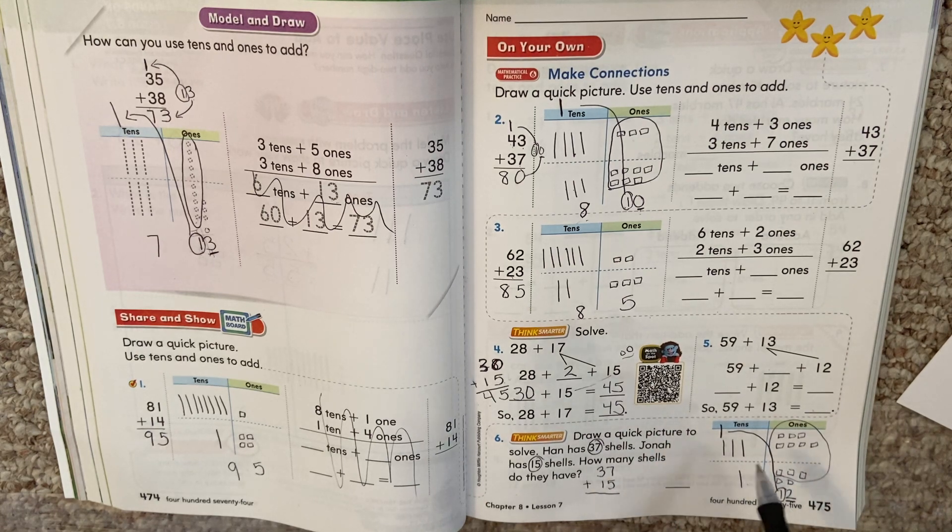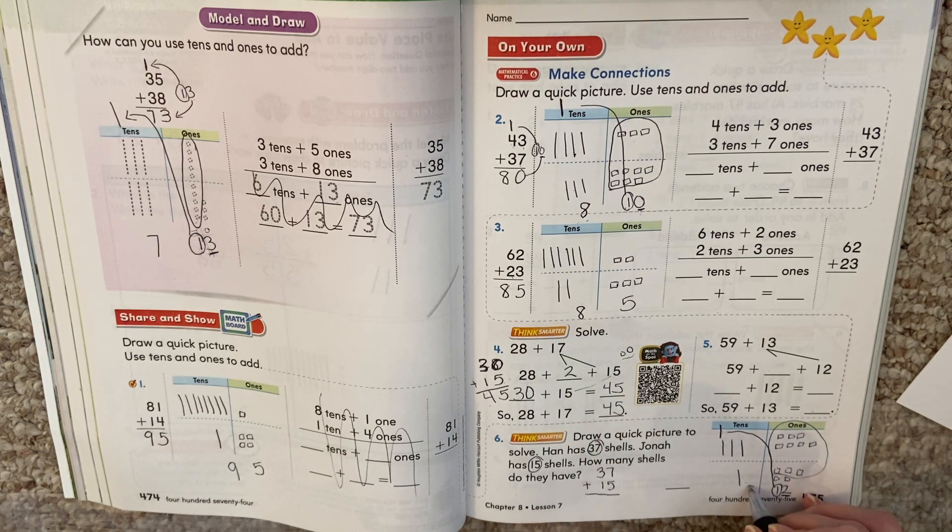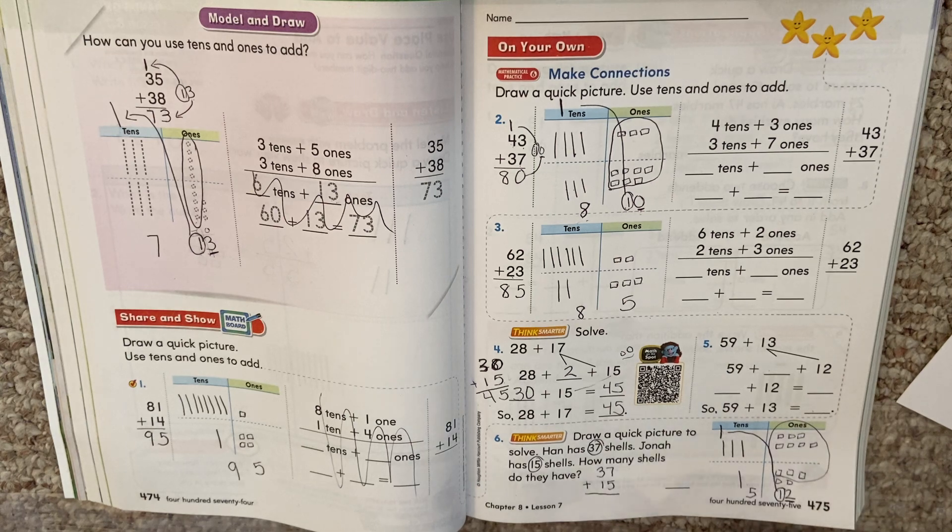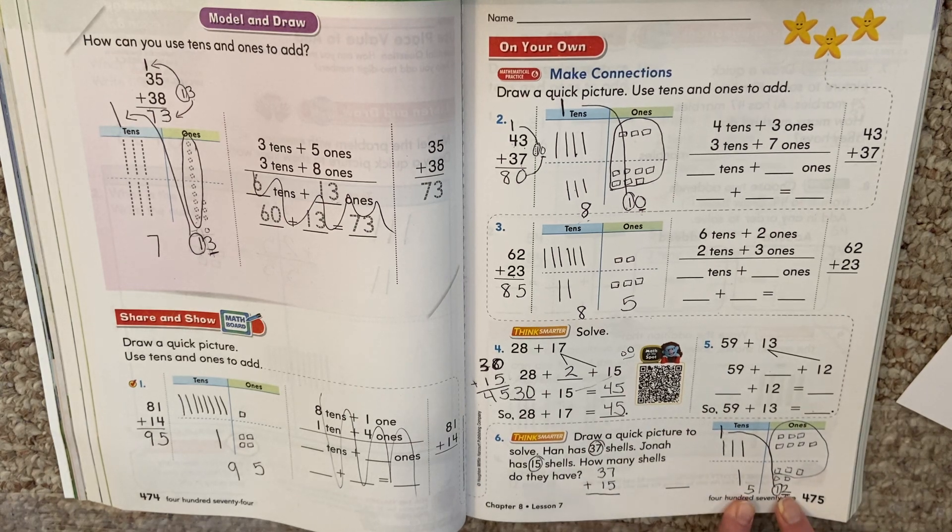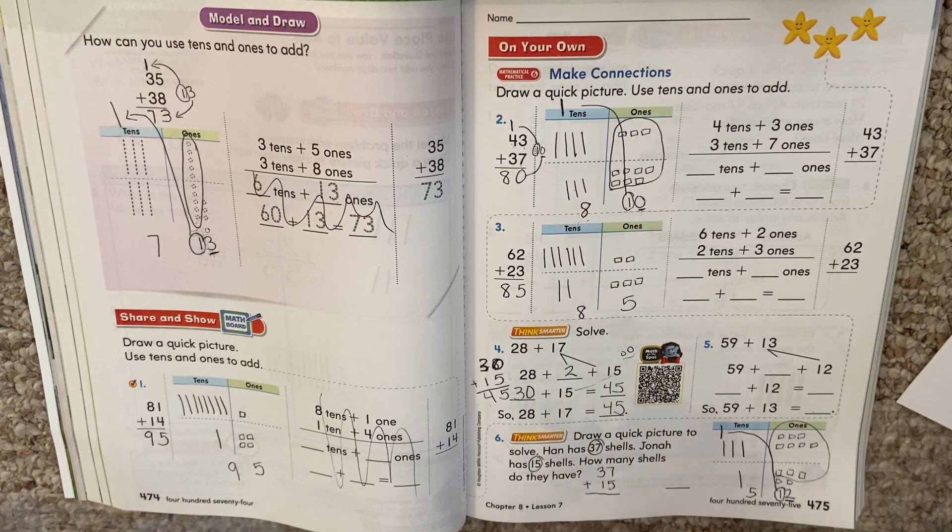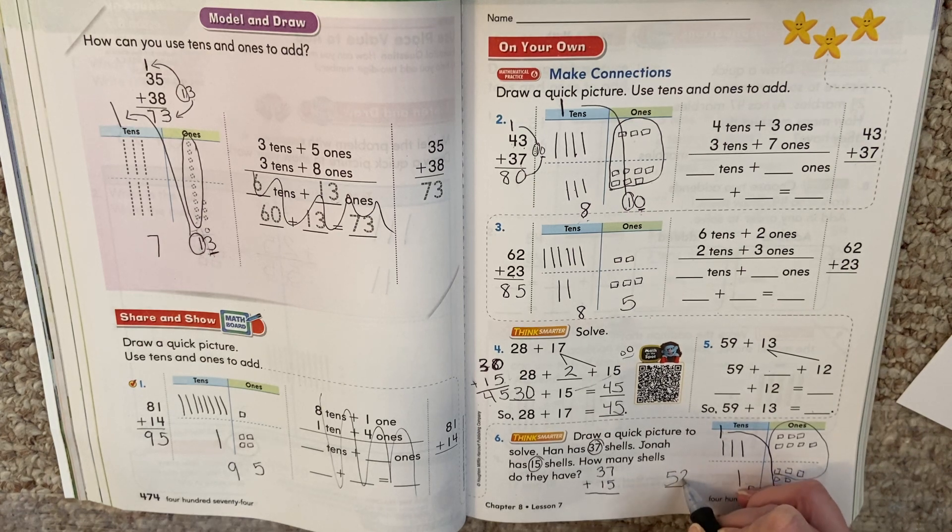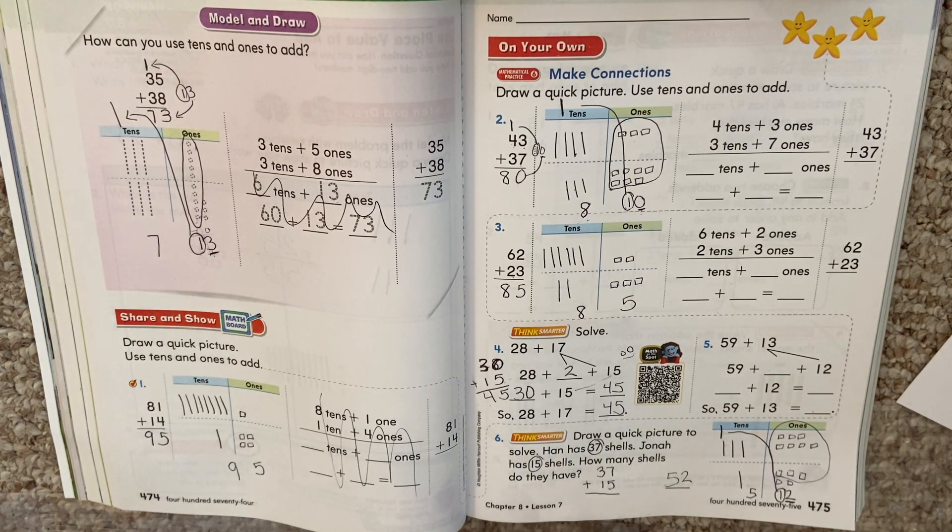Now how many 10s do I have? 1, 2, 3, 4, 5. 5 tens. So what number did I make? 5 tens and 2 ones. That's the number 52.